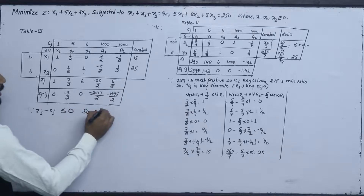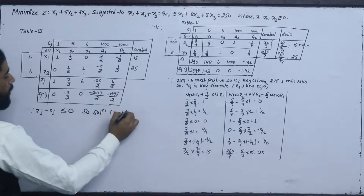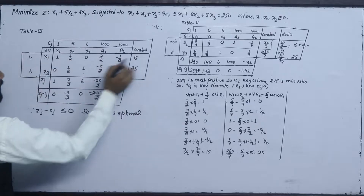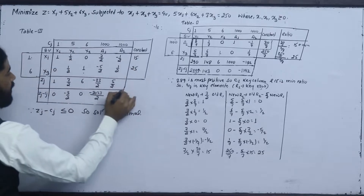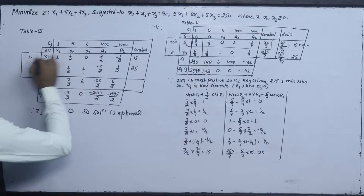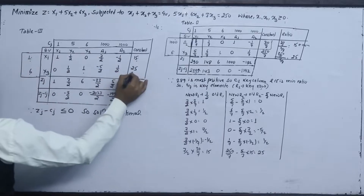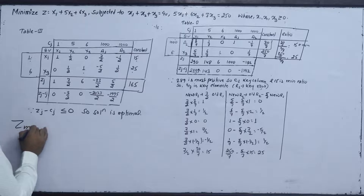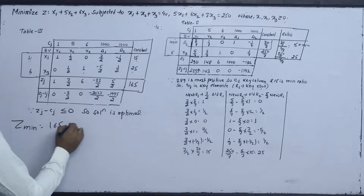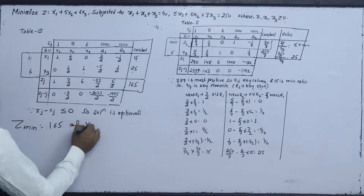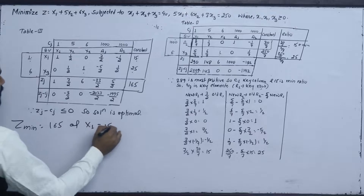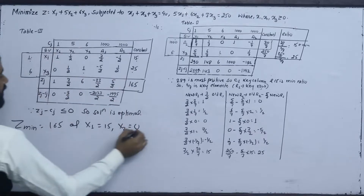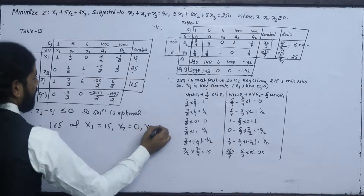Since ZJ minus CJ is less than or equal to 0, the solution is optimal. x1 equals 0 because it will not be in the basis, and x3 equals 25. Z equals 25 is the optimal value.